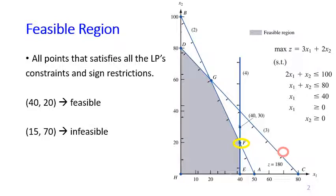Let's take a look at another point, like (15, 70). This point is infeasible because it does not satisfy at least one of the constraints or one of the sign restrictions. You can see that this point does not satisfy the second constraint — 15 plus 70 is not less than or equal to 80. Therefore, it is an infeasible point, and you can see that it falls outside of the feasible region.